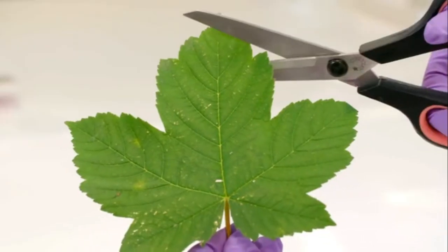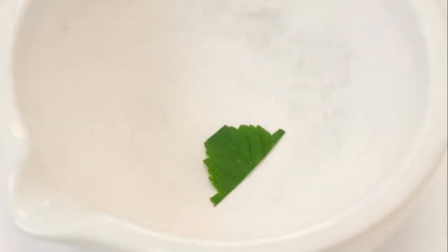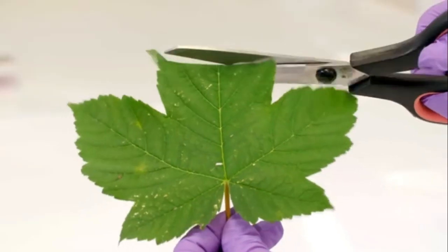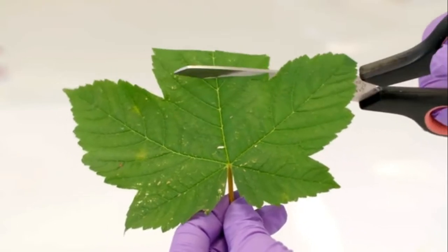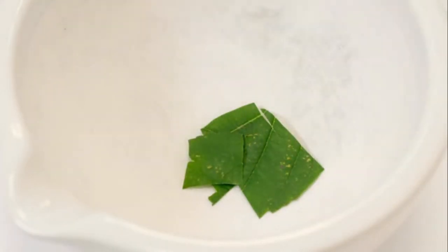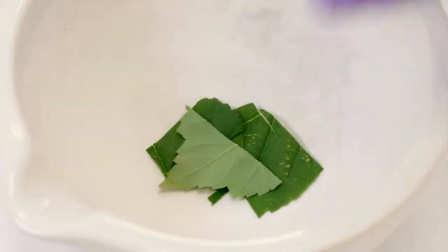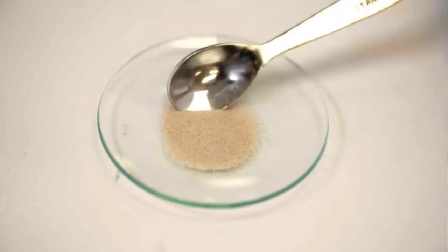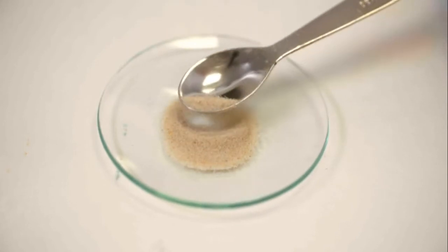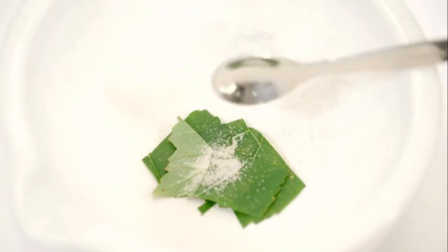To make a leaf extract, a leaf is first cut up into small pieces using scissors and then the leaf pieces are added to the mortar. Next, a pinch of sand is added to the mortar. This is used to break open the tough plant cells, releasing the pigments.